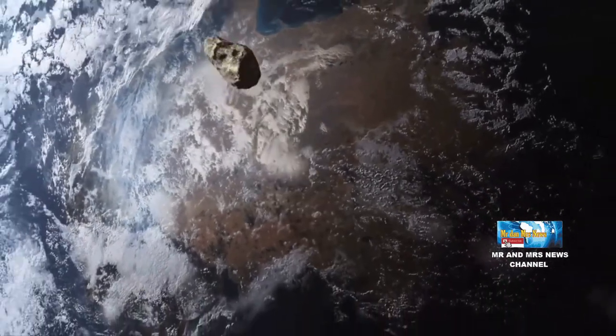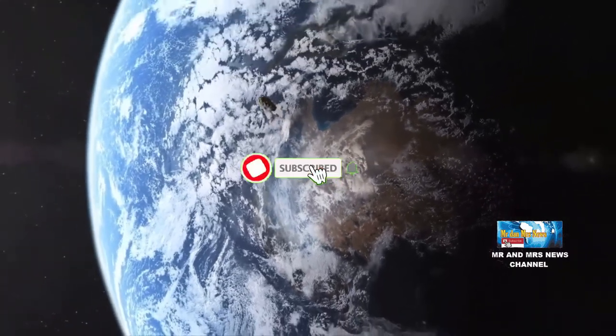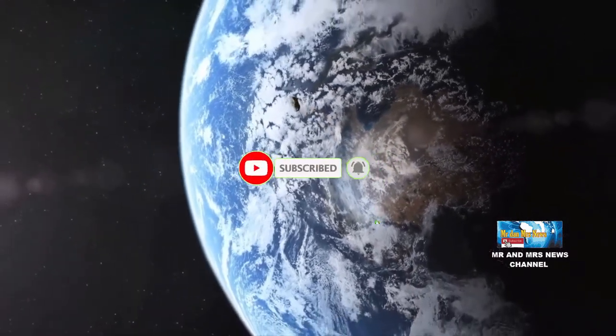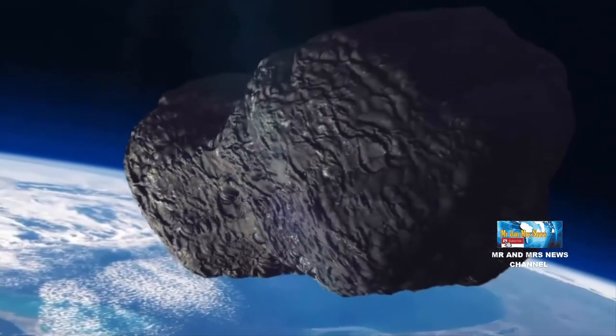Badan penerbangan dan antariksa Amerika Serikat atau NASA kaget lantaran sebuah asteroid lewat sangat dekat dengan bumi dan tak terdeteksi. Padahal, NASA selalu mengamati semua asteroid yang berpotensi menghantam bumi.